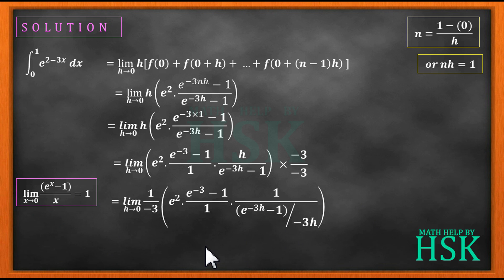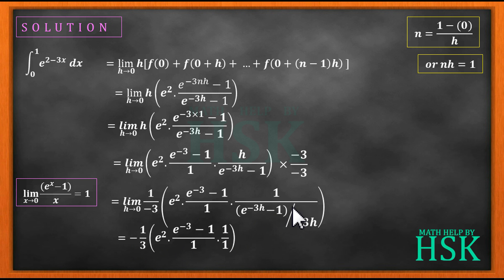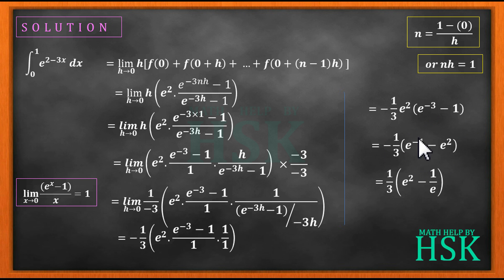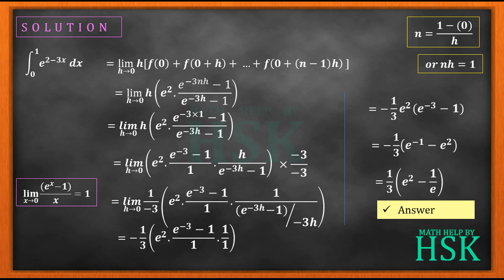Applying this formula, the term (e to the power of minus 3h minus 1) upon minus 3h becomes 1. So the expression simplifies to minus 1 by 3 times e squared times (e to the power of minus 3 minus 1). Further, e squared multiplied inside the bracket gives minus 1 by 3 times (e to the power of minus 1 minus e squared). Multiplying the minus sign inside, I get 1 by 3 times (e squared minus 1 upon e), which is the required answer.